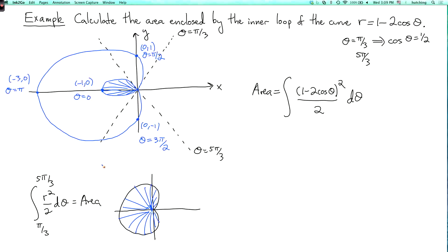To get the correct limits, you need to remember that theta is only defined up to adding integer multiples of 2 pi. So theta equals 5 pi over 3 is the same as theta equals minus pi over 3.